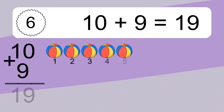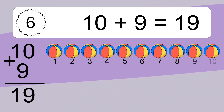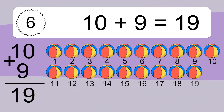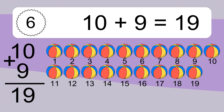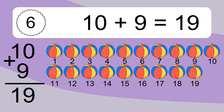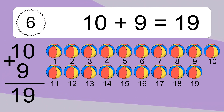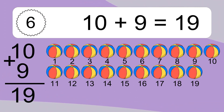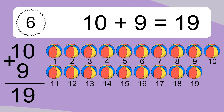Let's count it: 1, 2, 3, 4, 5, 6, 7, 8, 9, 10, 11, 12, 13, 14, 15, 16, 17, 18, 19.